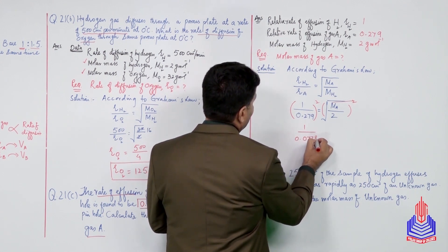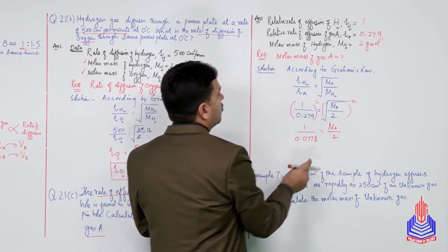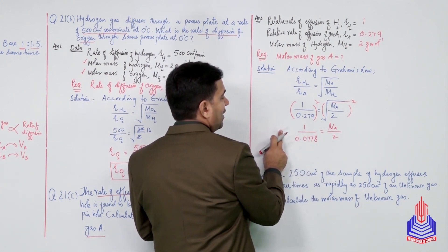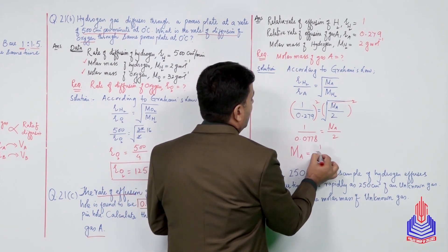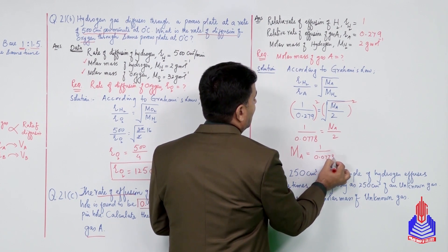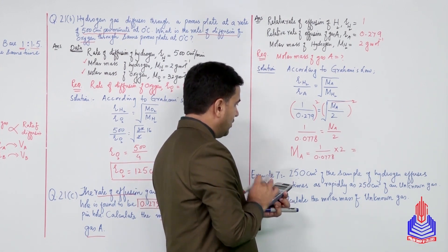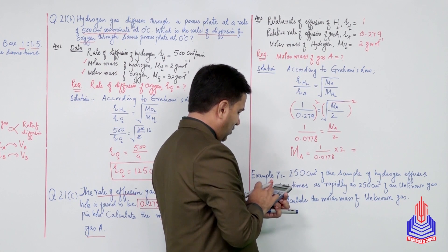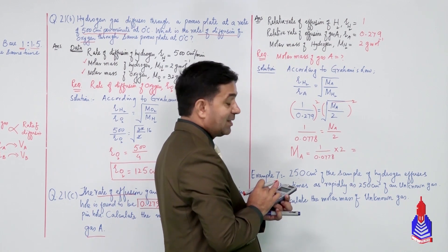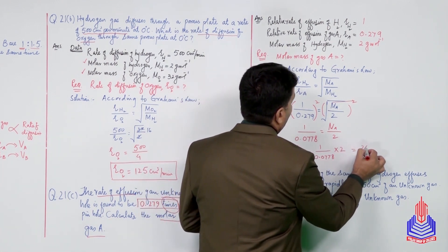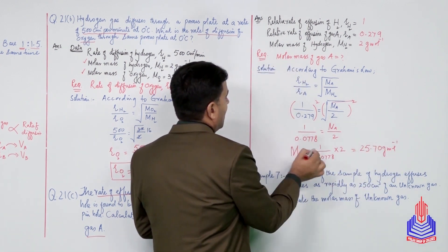After squaring both sides: 0.279² = 0.0778, and this equals molar mass of gas A over 2. Rearranging: molar mass of gas A equals 2 divided by 0.0778. The answer is 25.70 gram per mole.